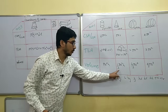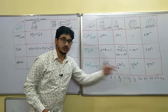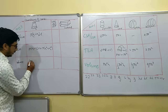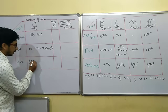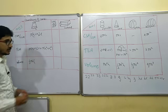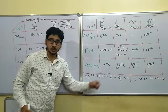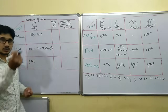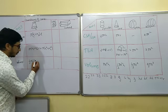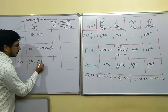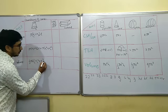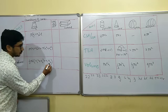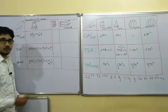What is there for volume? 1 by 3 pi·r²·h. Now write 1 by 3 pi·h separately. In the place of r², write r1² + r2². One small point you have to remember for volume: r1² + r2² + r1·r2. This is a small point you have to remember for volume.